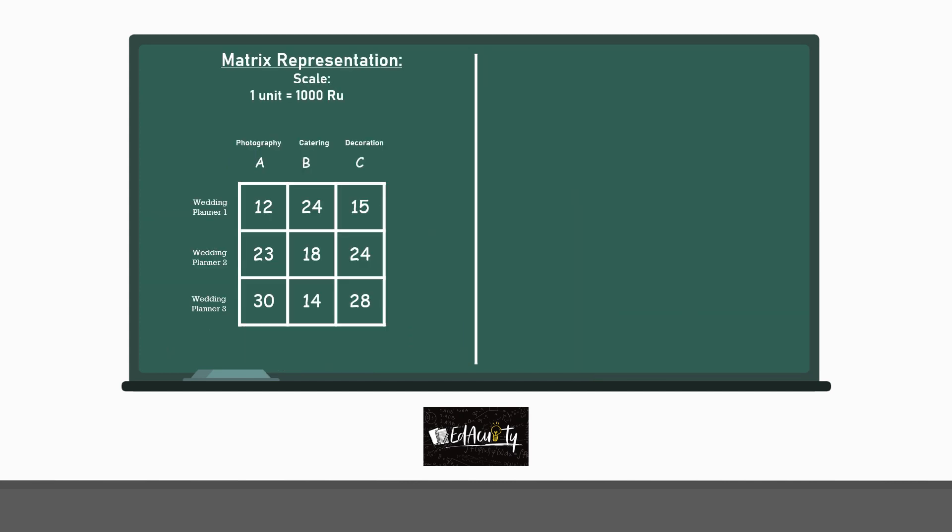This is the matrix representation corresponding to the problem. The costs incurred for the respective services are mentioned where one unit is considered to be equal to 1,000 rupees. So, the client will have to spend 12,000 rupees if he chooses wedding planner 1 for photography.